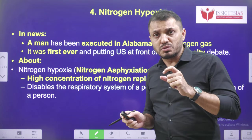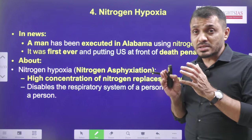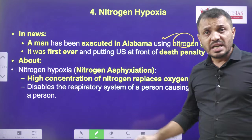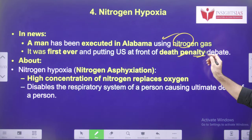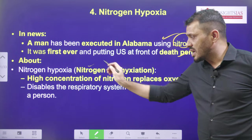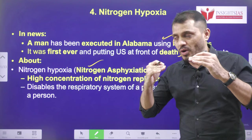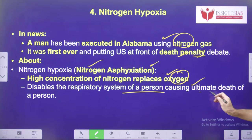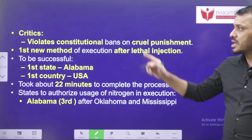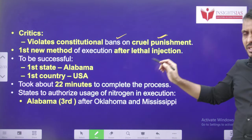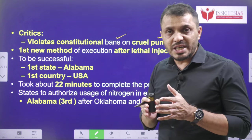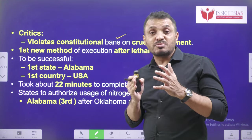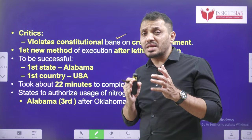What kind of death penalty method should be used? What are the rights of people subjected to the death penalty? A man was executed in Alabama using nitrogen gas — the first ever — putting the US at the front of death penalty debates. This is known as nitrogen hypoxia or nitrogen asphyxiation. Hypoxia means low amount of oxygen. The high concentration of nitrogen replaces the oxygen and disables the respiratory system, causing ultimate death. Critics say it violates constitutional bans on cruel punishment because the process lasts around 20 to 25 minutes.